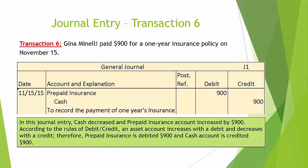Transaction 6: Gina Minnelli paid $900 for a one-year insurance policy on November 15. In this journal entry, cash decreased and the prepaid insurance account increased by $900. According to the rules of debit and credit, an asset account increases with a debit and decreases with a credit. Therefore, prepaid insurance is debited $900 and the cash account is credited $900.